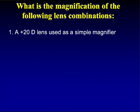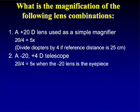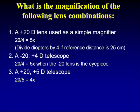To summarize: a plus 20 diopter lens as a simple magnifier gives D over 4 = 5x angular magnification. A minus 20 / plus 4 Galilean telescope gives 20 over 4 = 5x, upright image, shorter tube. Turned backwards it gives 1/5x minification. A plus 20 / plus 5 astronomical telescope gives 20 over 5 = 4x, inverted image, longer tube.